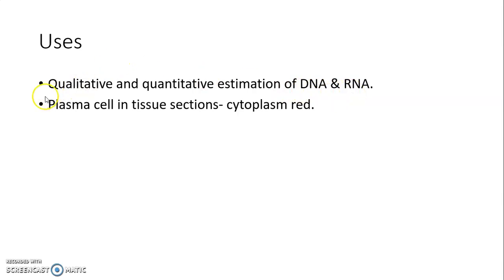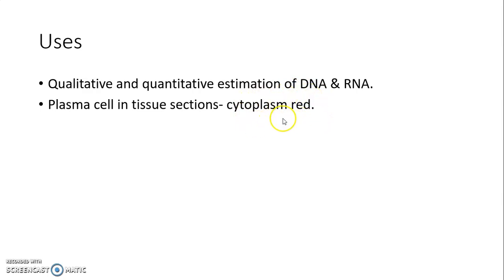Methyl green pyronin stain also stains plasma cells in tissue sections, which will stain red. That's all on nucleic acid stains. Thank you.